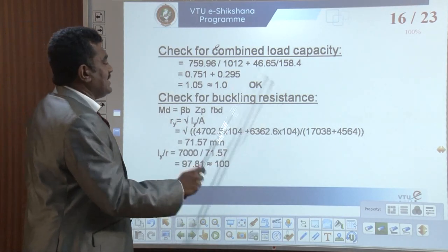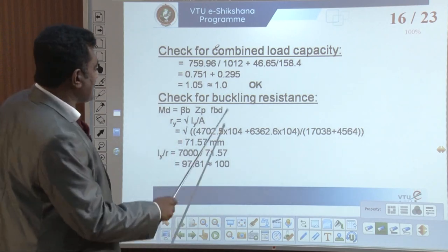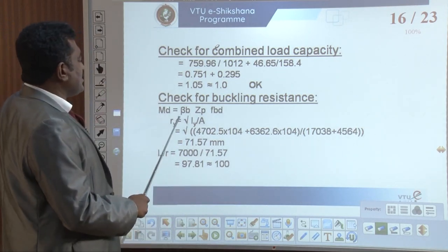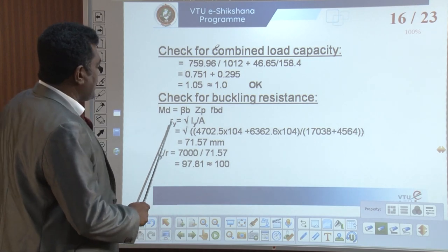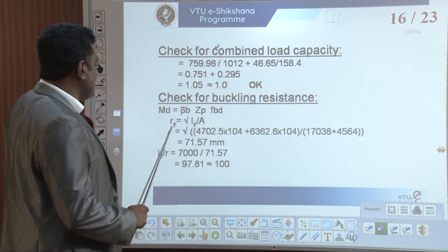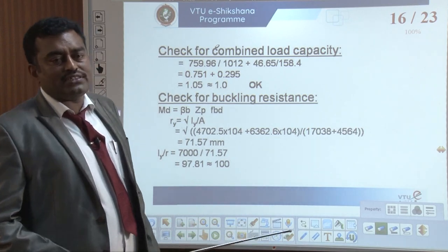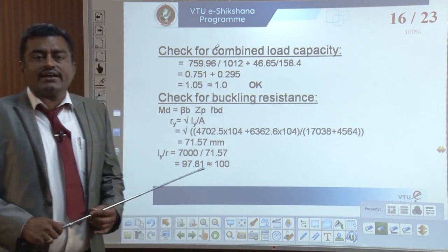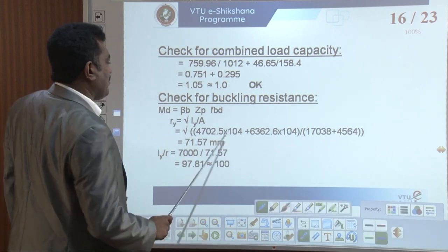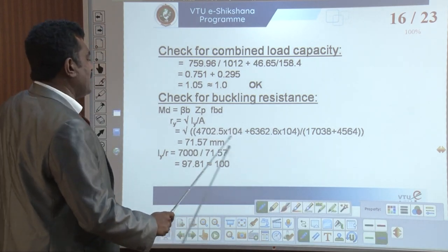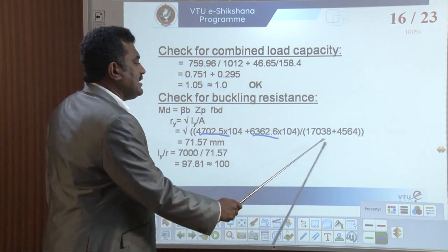Then check for buckling resistance. How is the buckling resistance calculated? The formula is given in IS 800: MDz equals beta_b × Zp × Fbd. Here ry — that is the radius of gyration — equals root of (Iy divided by A), where Iy is the moment of inertia about y and A is the area. For the combination of WB and ISMC sections, the total area is given in 10 raised to 4.